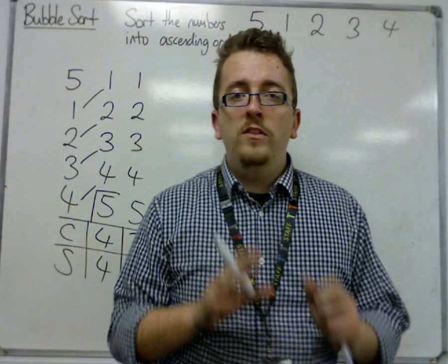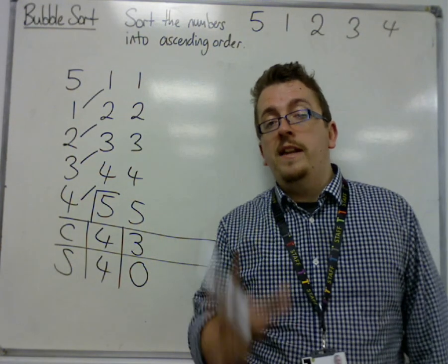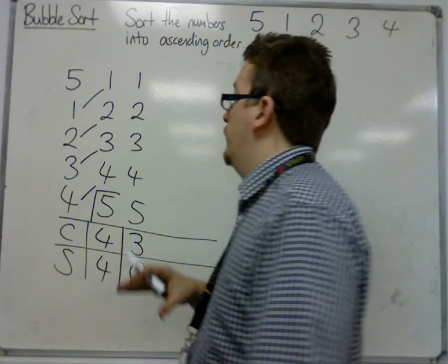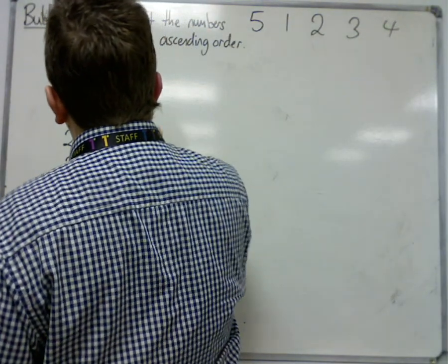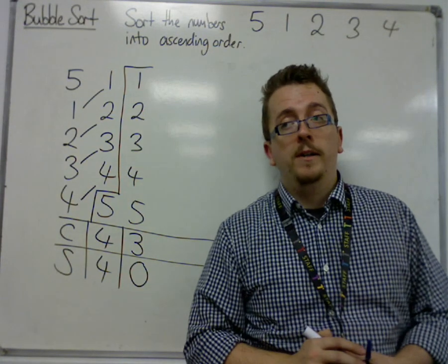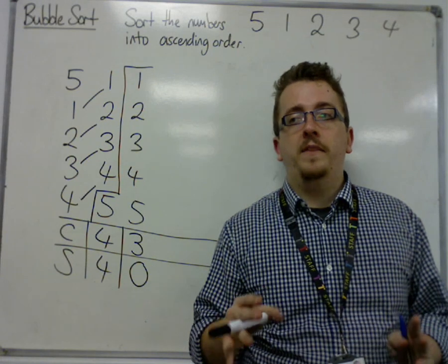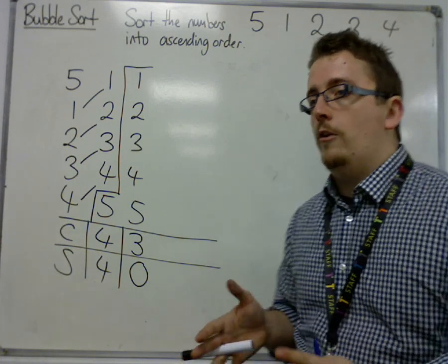When there have been no swaps on a pass, it must therefore mean that the list of numbers are in order. So the algorithm ends right there, and all of them can be boxed off. All the remaining ones can be boxed. If you have a pass with 0 swaps, you're done. That's it. There are no more comparisons.